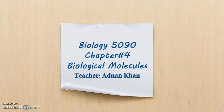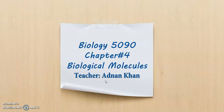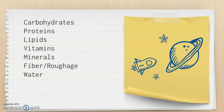We will discuss their properties and why they are required in the body. Biological molecules are those molecules which are present inside living things. They are required for certain purposes and have certain roles in our body. Examples frequently asked at IGCSE or O-levels 5090 include carbohydrates, proteins, lipids, vitamins, minerals, fiber (roughage), and water.